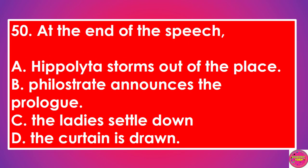Question 50: At the end of the speech: A. Hippolyta storms out of the place, B. Philostrate announces the prologue, C. The lady settled down, D. The curtain is drawn. The correct answer to this question is B. Philostrate announces the prologue.